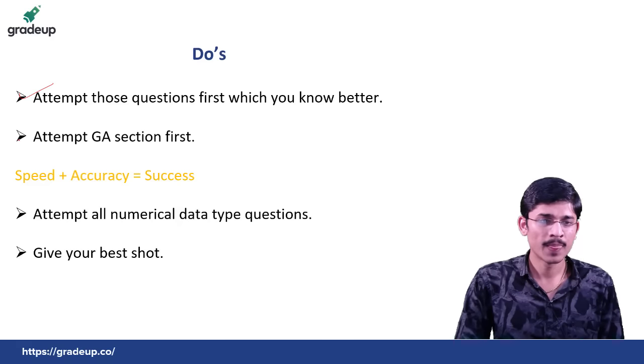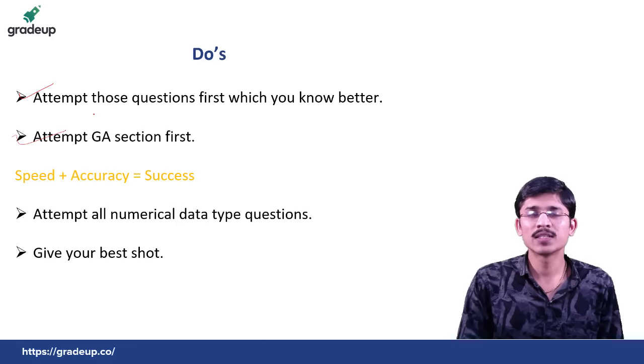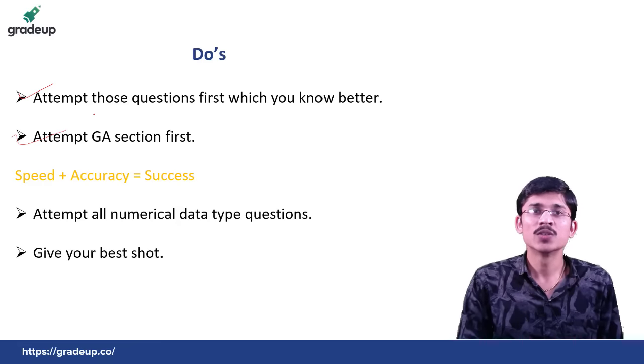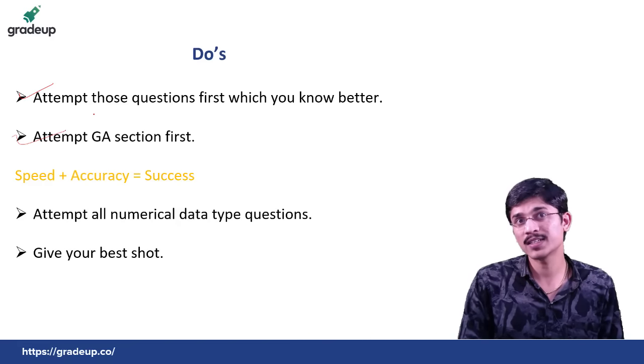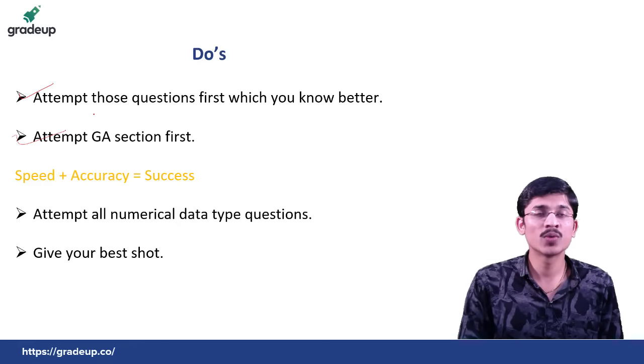Attempt GA section first. Most of the guys say that GA section is not so important, but I think that for a paper of 100 marks, 15 marks are so much important. So don't neglect the GA section. GA section will give you 15 marks in very less time, so you can give more time to your technical section.